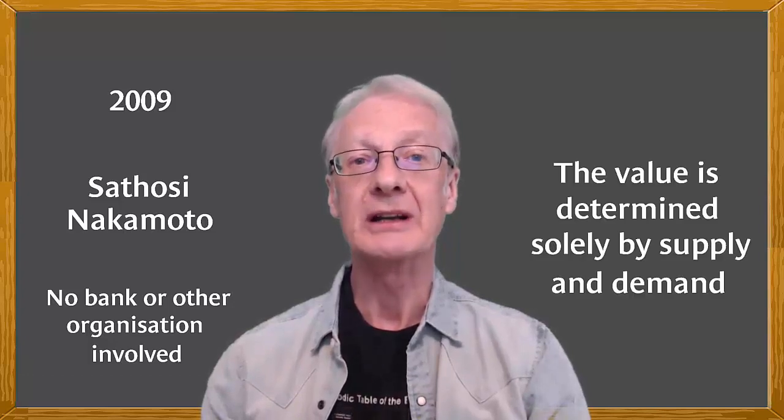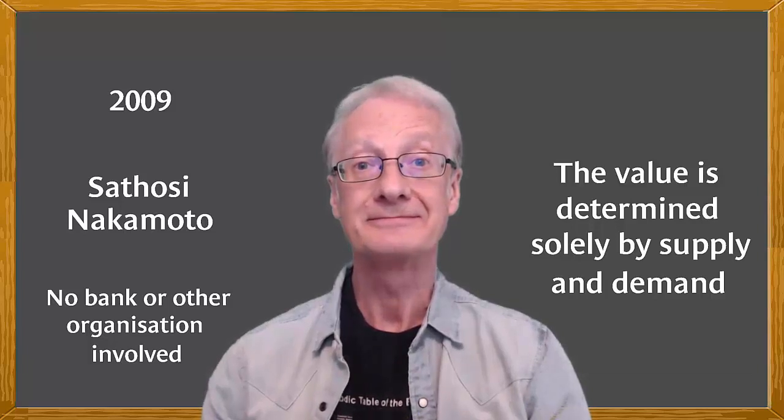The origin of Bitcoin lies in a document published in 2009 in a cryptography forum by a programmer whose nickname was Satoshi Nakamoto. There's a link to this article in the description of this video. Transactions in this new type of currency are carried out directly between users, with no bank or other organization involved. The value of the Bitcoin is determined solely by supply and demand.